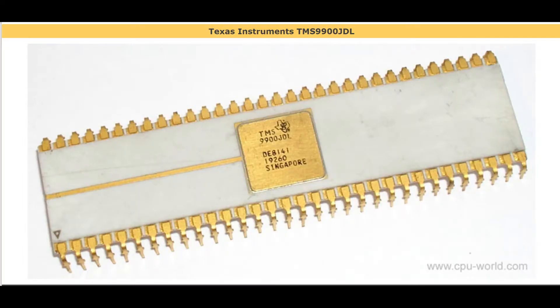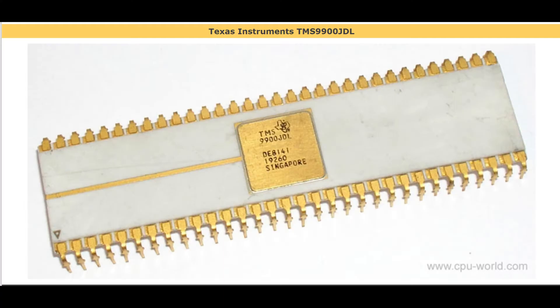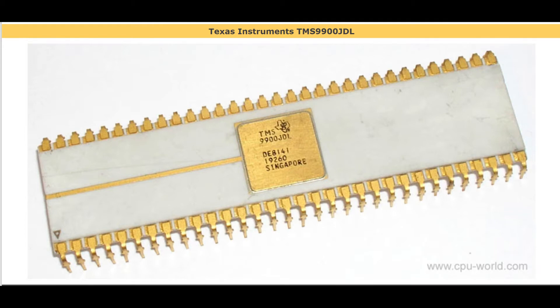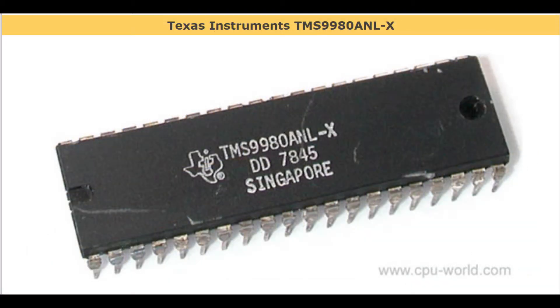The 9900 was announced in 1975, but there were no 16-bit peripherals to go with it. Rimes actually pitched the idea of using the chip for the IBM PC to IBM. He was turned down, but the result of this was the 9980 chip, which would ultimately end up in the TI-994.